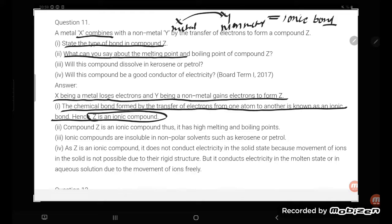What can you say about the melting point and boiling point of compound Z? It will be very high. Ionic compounds have very high melting and boiling points. Compound Z is an ionic compound, thus it has high melting and boiling points.